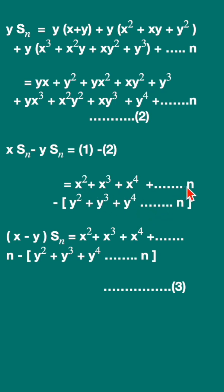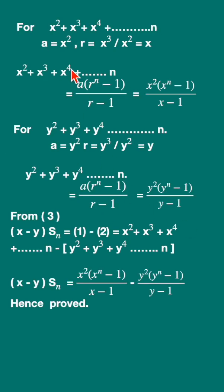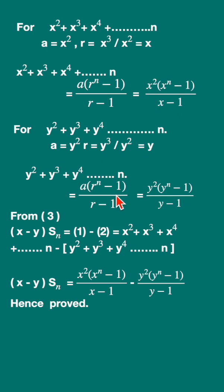This remaining expression is a geometric series, and this part is also a geometric series. Applying the geometric series formula with a = x², common ratio r = x, substitute to get the first value. Similarly for the y² + y³ + ... part, substitute to get the corresponding expression.